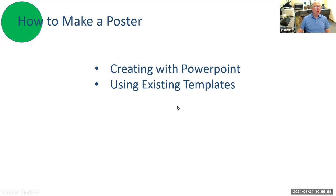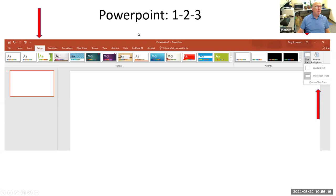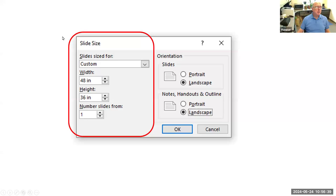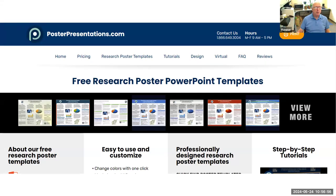How to make a poster: the easiest way is to use PowerPoint — one slide with your elements, set the printing size, and you're done. You can also use existing PowerPoint templates. There are basically only three steps: go to PowerPoint, select Design, go to Slide Size, then select Custom Size. For a 48-by-36-inch poster, type those numbers in, select landscape, and you're done. Then build your poster within PowerPoint.